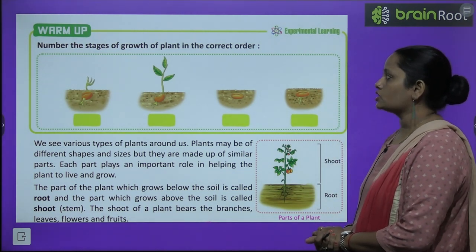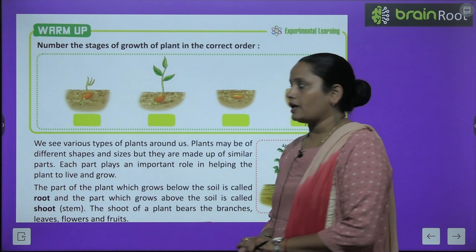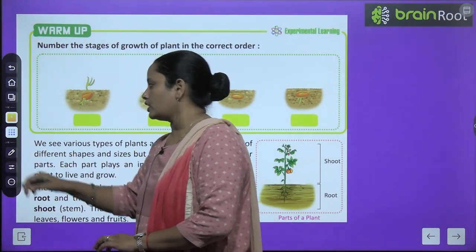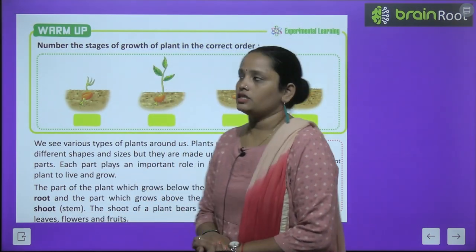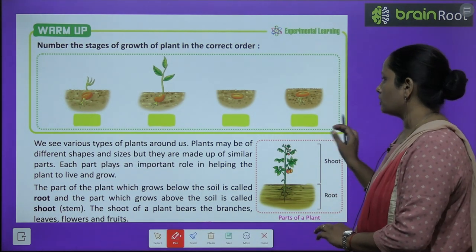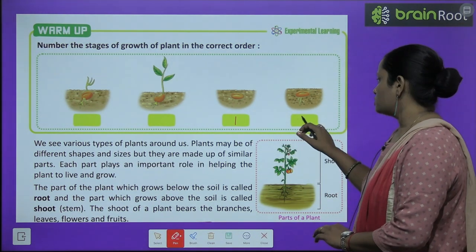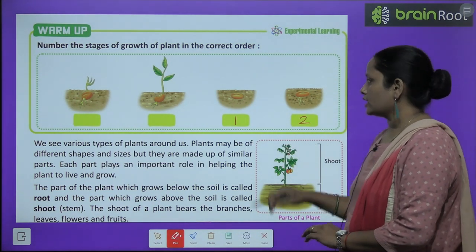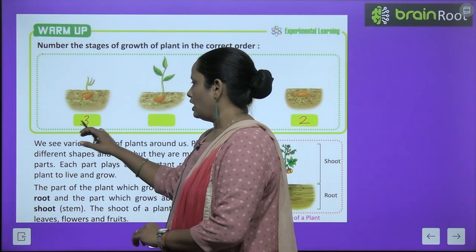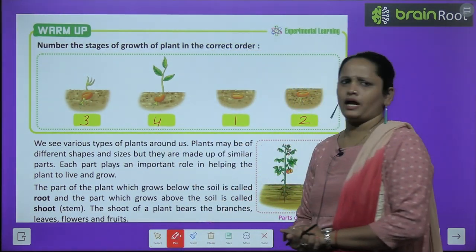Number the stages of growth of a plant in the correct order. Here we have some stages of how plants grow, like we had in the last chapter. We had to number them accordingly. So first we have the seed, then roots grow from it, then a shoot from it, and then it becomes a plant.